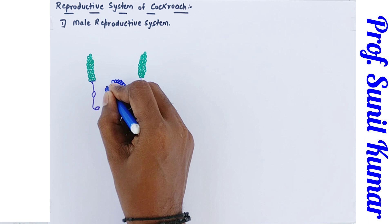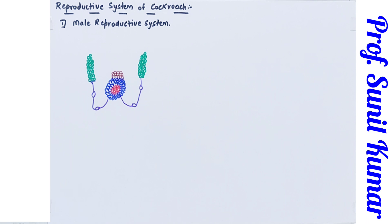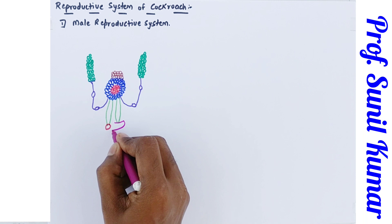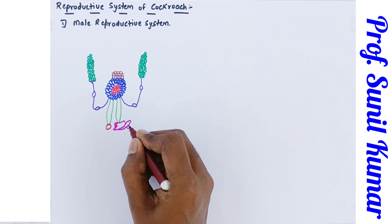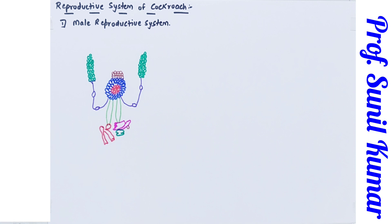The seminal vesicle is connected to the vas deferens. What I'm drawing now is the ejaculatory duct — the duct that is very important for release of sperm. The circle I've drawn is the gonopore. These are the phallomeres, which are involved in reproduction. Cockroaches do not have a reproductive organ like a penis; instead they have something called a pseudopenis, which acts like a penis but is not the real penis. This is how you can draw the diagram of the male reproductive system in the simplest way.